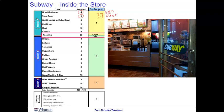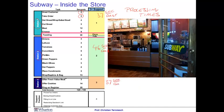We refer to this time as the processing time. Processing times are always expressed in seconds per customer, or more generally, in units of time per flow unit. In the same way, station two has a processing time of 46 seconds per customer, and station three has 37 seconds per customer. These numbers are called the activity times.